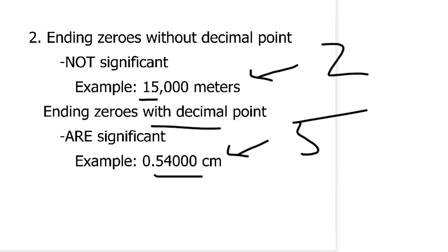So, with the decimal point, zeros at the end count as significant figures, and without the decimal point, the zeros at the end do not count.